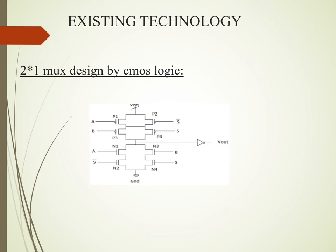In the existing technology, multiplexers are designed using CMOS logic. As you can see in the diagram, it uses PMOS and NMOS. CMOS is the combination of PMOS and NMOS — the upper part of the diagram is PMOS and the lower part is NMOS, also called the pull-up network and pull-down network.